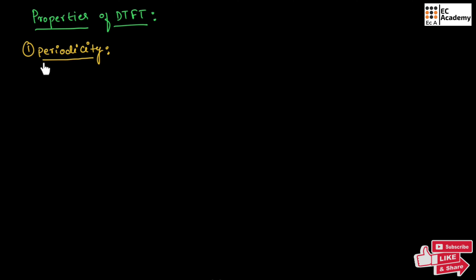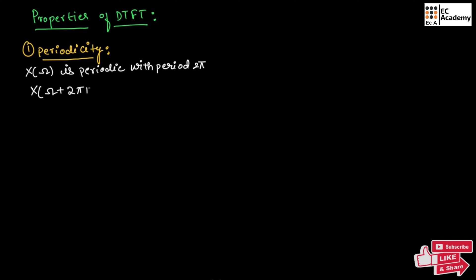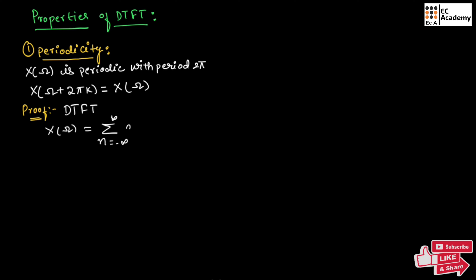Let us understand the first property which is periodicity. The periodicity property states that X of omega is periodic with period 2 pi, which means X of omega plus 2 pi k will be equal to X of omega. Let us prove this. From the definition of DTFT, we can write X of omega is equal to summation of n from minus infinity to infinity of x of n exponential to the power of minus j omega n.